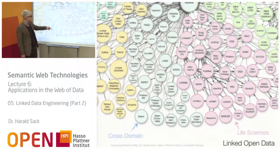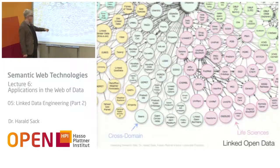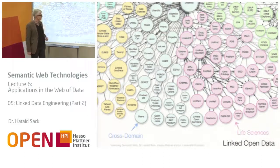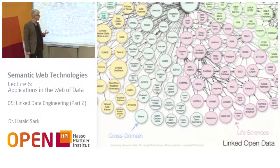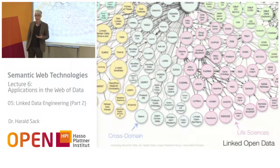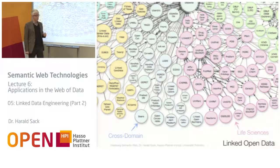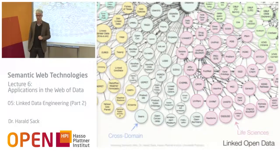At last, we have the cross-domain data — for example, encyclopedias like DBpedia, and also ontologies like YAGO, UMBEL, OpenCyc and so on. The red part is life sciences. Life sciences have so-called legacy data, because in life sciences they tried to build ontologies and knowledge representations for much longer than in the Semantic Web. These have been translated from their original representation into RDF data, and this is also a rather huge part of the Linked Data Cloud.